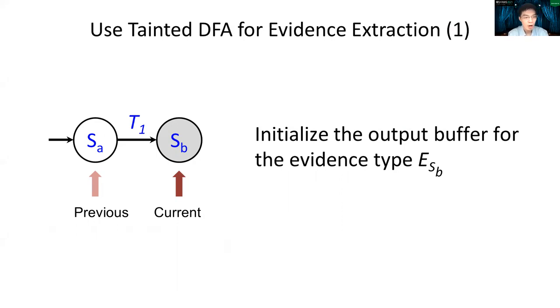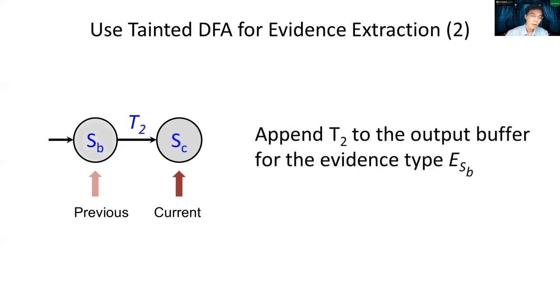In this scenario, since we just moved from a state without evidence to the one that has certain evidence type, we initialize this output buffer. And following the previous one, if both pointers point to states with the same evidence type, we shall append the input character to the output.